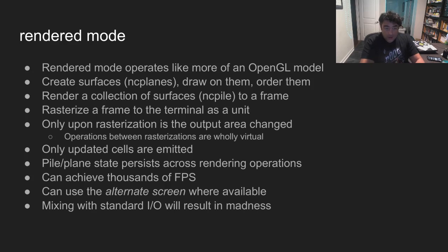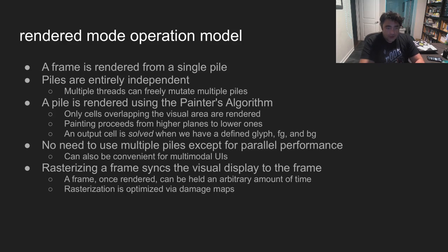Rendered mode is where NotCurses really shines and represents a true advance over existing solutions. It operates similarly to OpenGL: objects are prepared and arranged, and then rendered en bloc to a frame. Frames are rasterized into streams of glyphs and control sequences, and written atomically to the terminal — it is only at this time that the display changes. Output is carefully optimized so that only the minimal string is written to the terminal, and the objects forming the frame retain their state across calls. This operating mode can easily result in thousands of frames per second, far beyond the capacities of any known display technology. What you give up for this power is the ability to use standard I/O — all output needs to be run through NotCurses. This is driven through the NotCurses call NCPileRender, which generates a frame in memory. While a pile cannot be modified during the render operation, different piles can be freely modified by multiple threads.